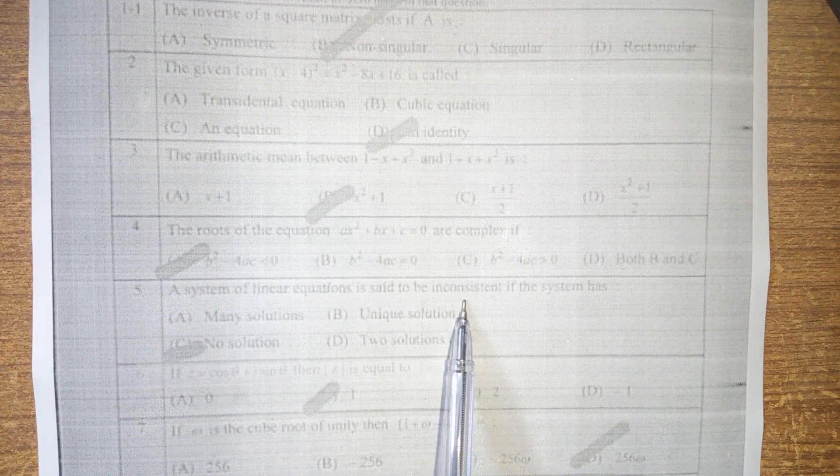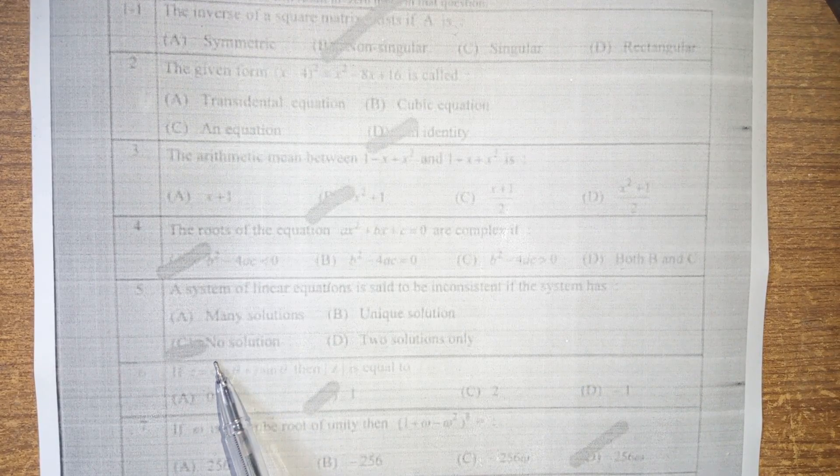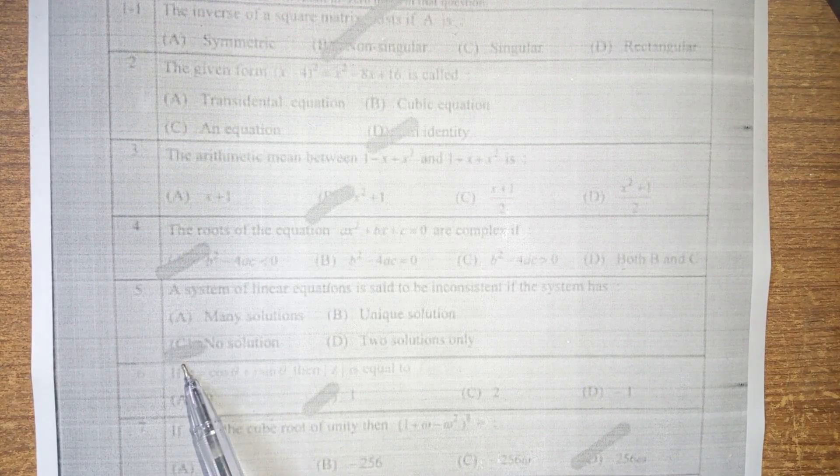After that, the system of linear equations is said to be inconsistent if the system has no solution. Option c.